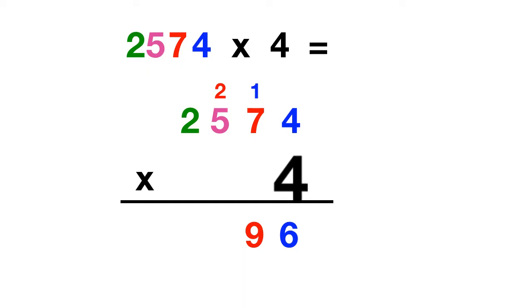Then we multiply 4 times 5 hundreds, plus these 2 hundreds. Well, 4 times 5 is 20, plus those 2 that are regrouped gives us 22.